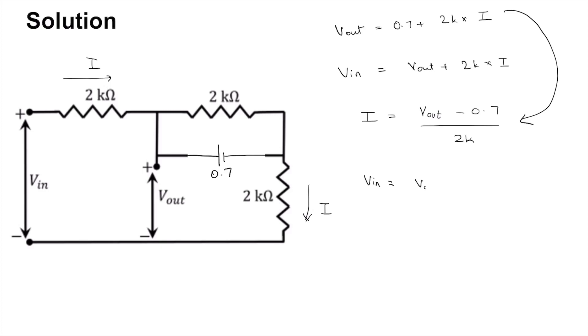...Vout minus 0.7 by 2k. So that means Vout is going to be Vin plus 0.7 volt divided by 2. Now what is the voltage small signal voltage gain?